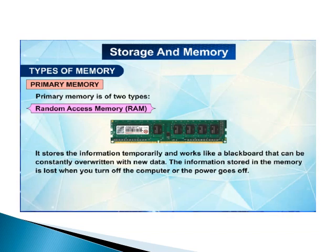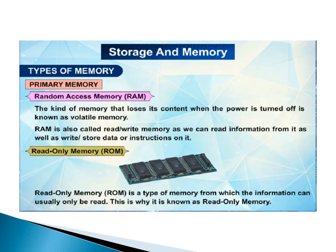Random access memory (RAM) stores information temporarily and works like a blackboard that can be constantly overwritten with new data. The information stored in RAM is lost when you turn off the computer — this is why RAM is known as volatile memory. RAM is also called read-write memory, as we can both read information from it and write or store data and instructions on it.